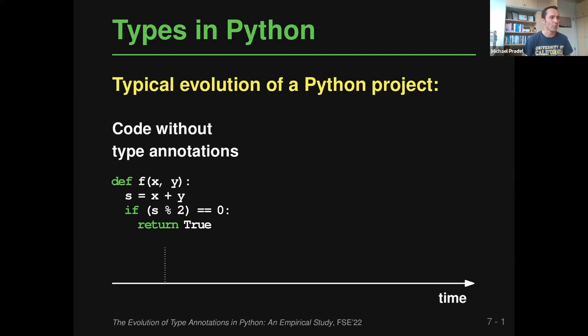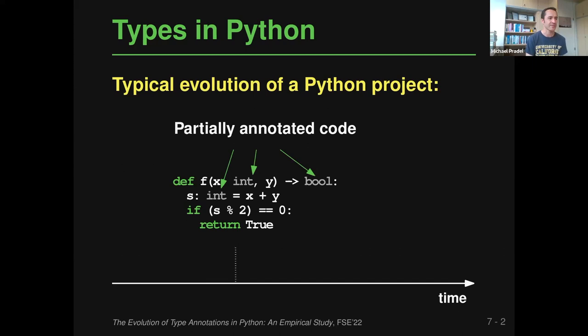To motivate the work on fixing type errors in Python, let me look at a typical evolution of a Python project. Initially, someone writes code that typically does not have type annotations — people want to prototype fast without worrying about types. Then as the project grows, there's a need to add type annotations. There has been prior work, including by me and collaborators, on predicting these types using neural models, but that's not what I'm talking about today.